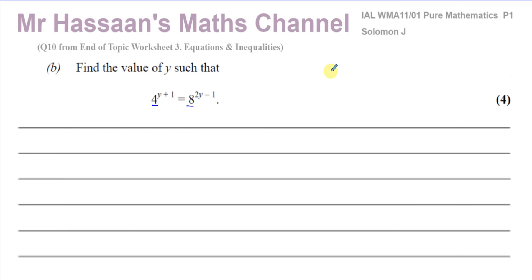Once you think about it, 4 and 8 can both be expressed as 2 to the power of something. We know that 2 squared is 4 and 2 cubed is 8. So we can express both of them as 2 to the power of something. So 4 is 2 squared, so you have 2 squared to the power of y plus 1 equals, and 8 is 2 cubed, so you have 2 cubed to the power of 2y minus 1.